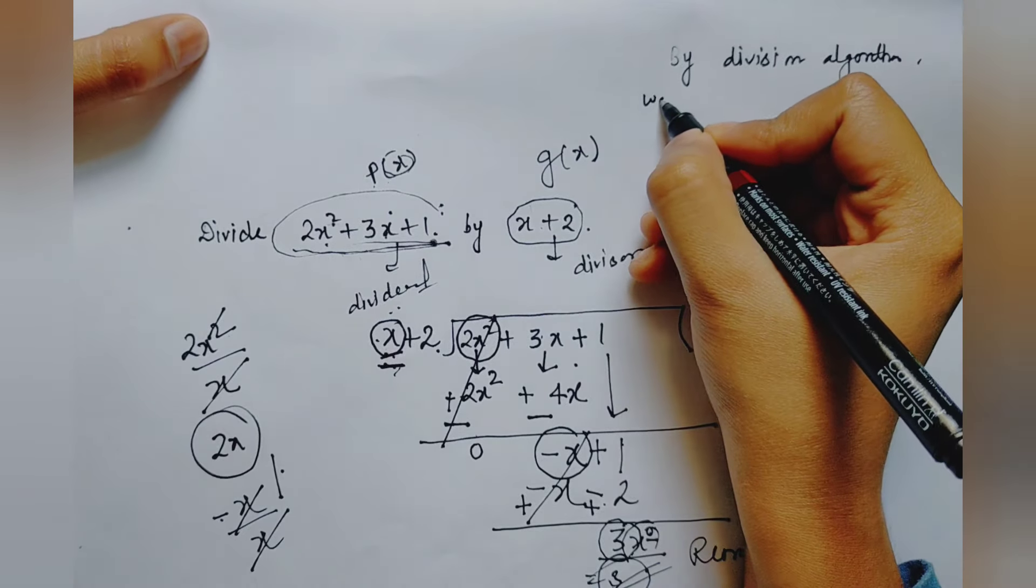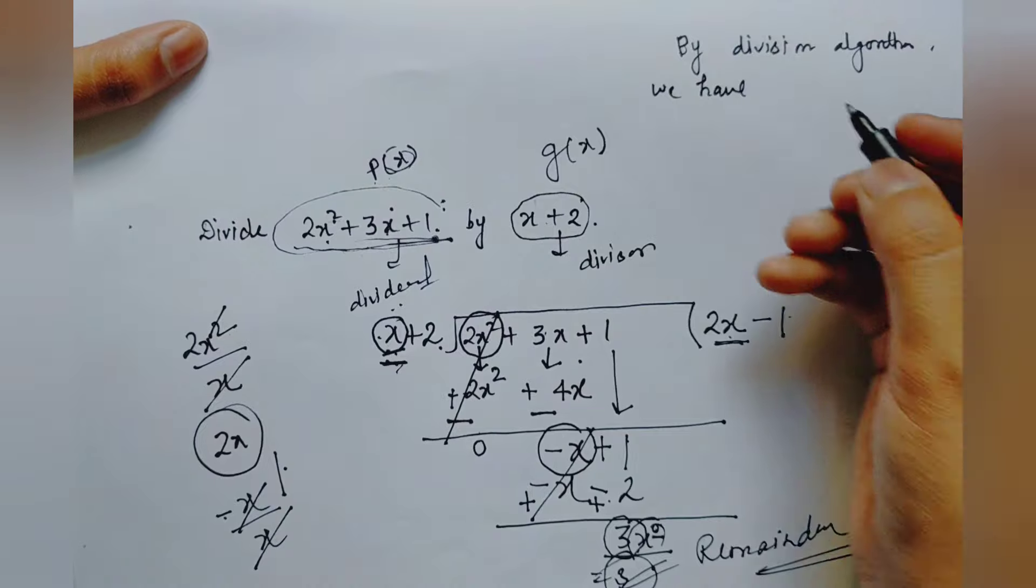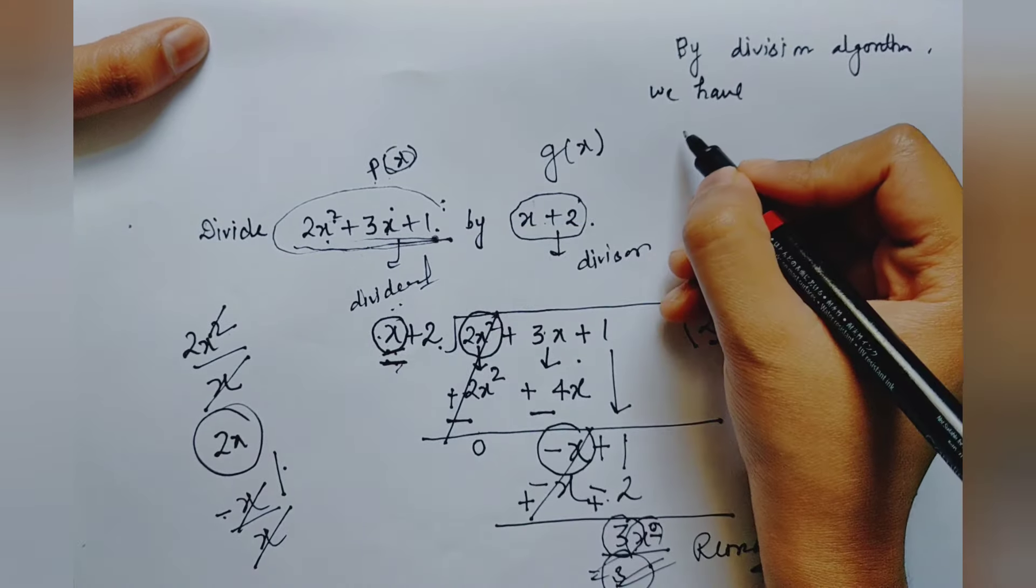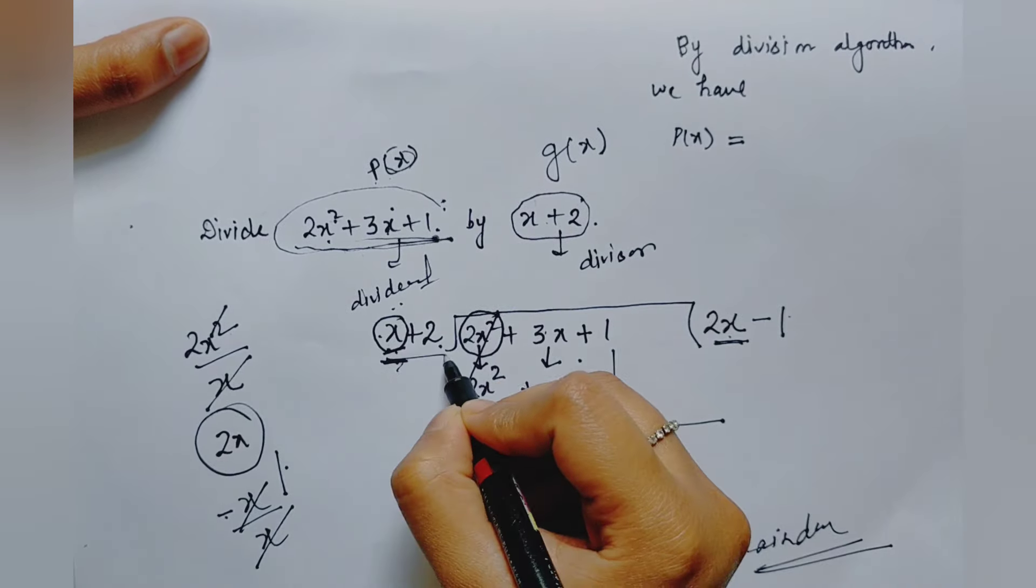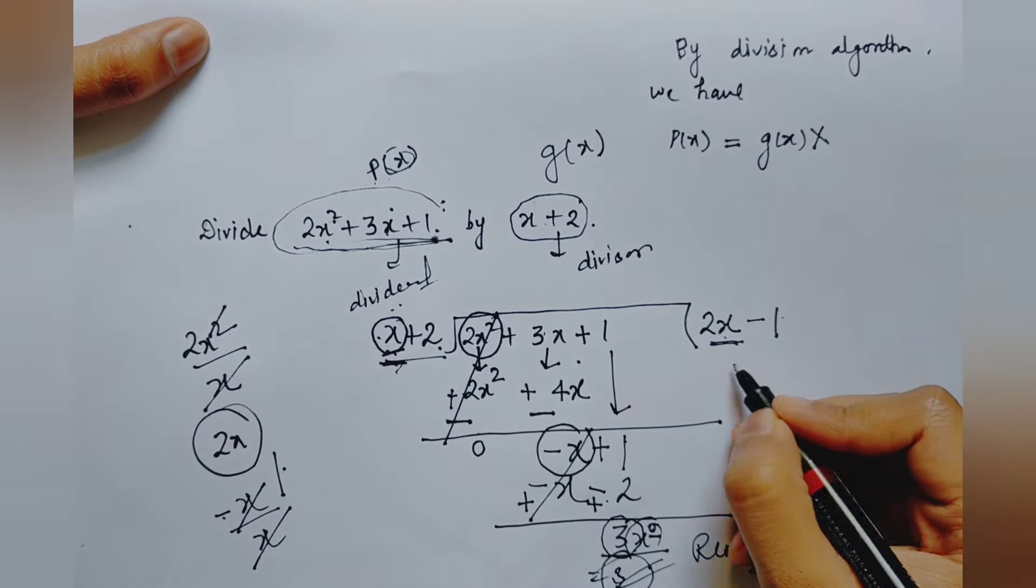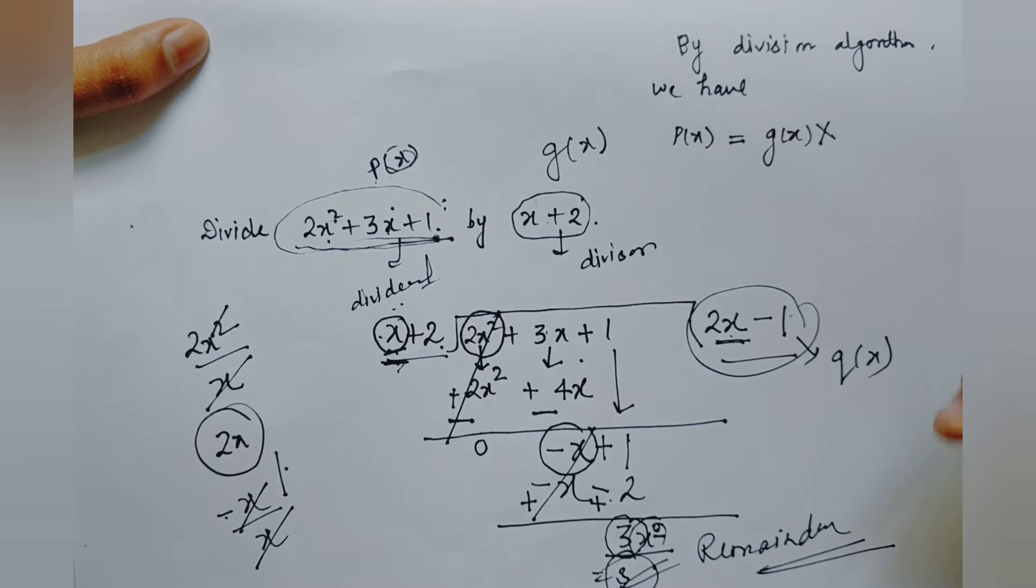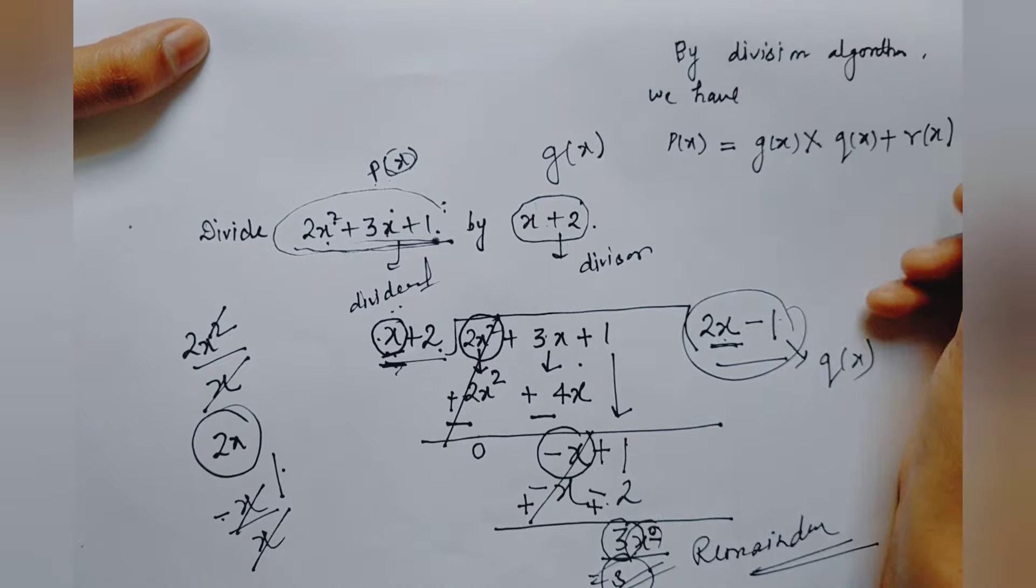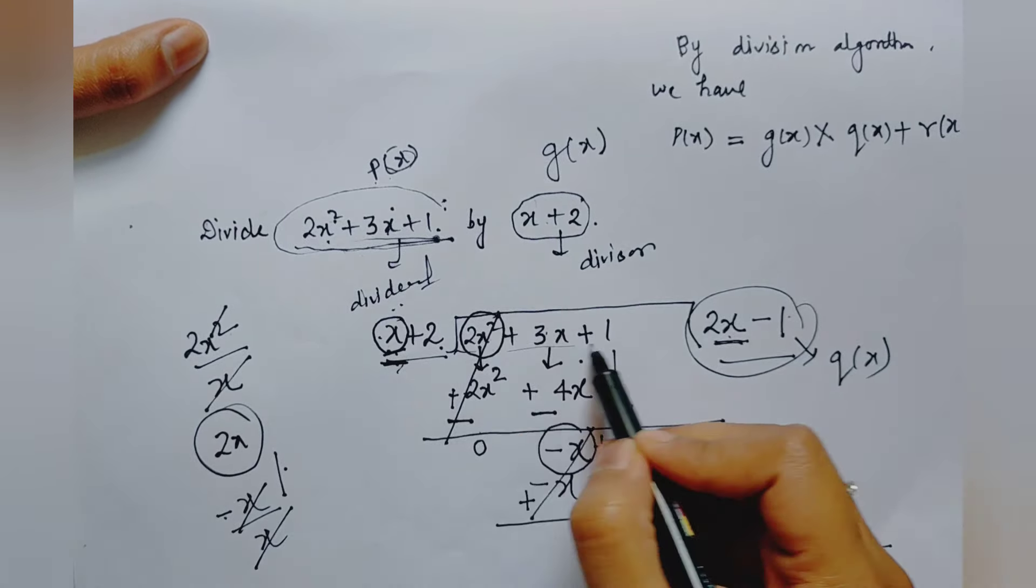By division algorithm, we have: the statement is that dividend equals divisor times quotient plus remainder. So P(x) equals divisor g(x) times quotient q(x) plus remainder r(x). We will verify this relation to complete our quotient.